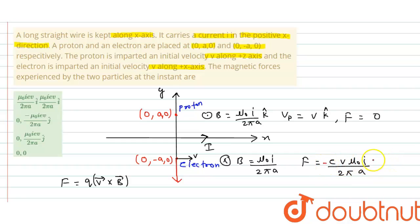So correct option is option B: zero and this. I hope you've understood this explanation. Thank you.